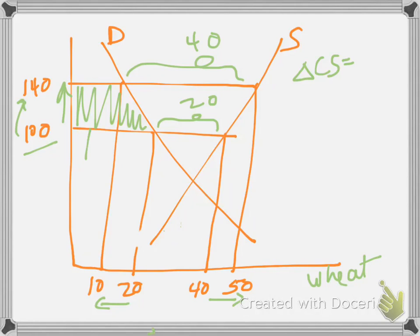So that's the change in consumer surplus. And that's equal to this rectangle, which is 10 times 40, so that's $400. And this triangle here, which is 10 times 40 divided by 2, so that's 5 times 40 is 200. So the change in consumer surplus is 600, and that's a negative number.